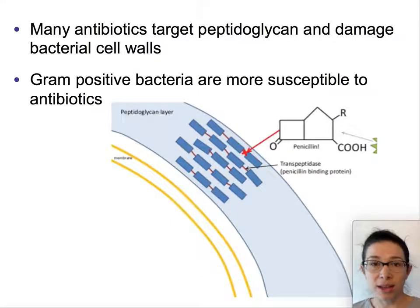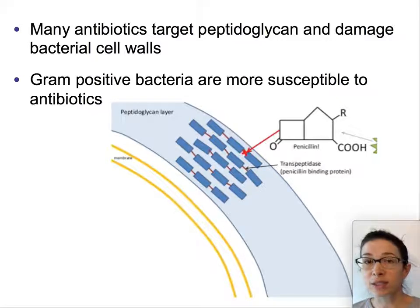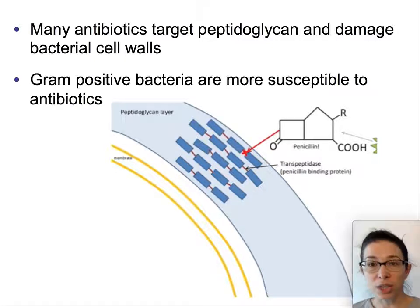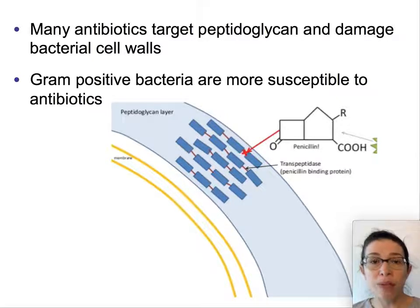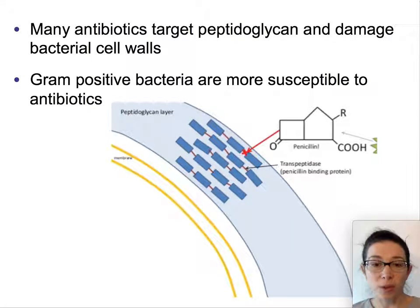Bacteria with a thick cell wall are going to be more susceptible to those kinds of antibiotics. So it's important to remember that these particular antibiotics are going to affect gram-positive bacteria more than gram-negative. There are other kinds of antibiotics that target different processes in bacteria — some target the machinery that bacteria use to make proteins, for example. We are constantly developing new antibiotics because bacteria become resistant, and we are constantly working against this rapid evolution to develop new methods of targeting bacteria specifically without killing mammalian cells.